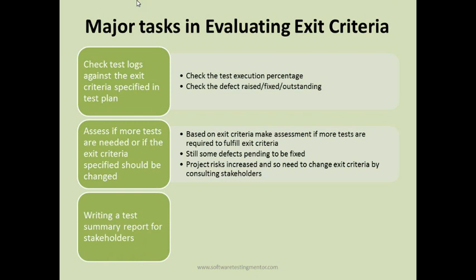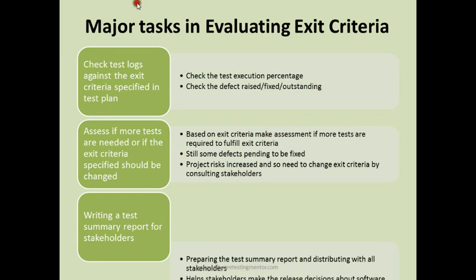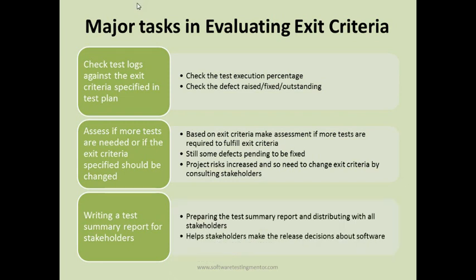Another task in evaluating exit criteria is writing a test summary report for stakeholders. You prepare the test summary report and distribute it to all stakeholders, which helps them make release decisions. The report covers how testing progressed, what percentage of test cases were executed, how many defects were raised, and how many are pending — based on which stakeholders decide whether to release the software.